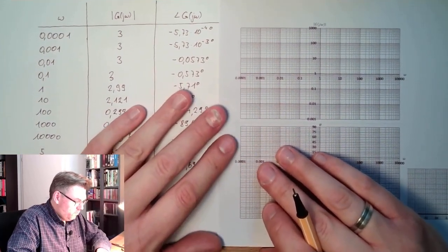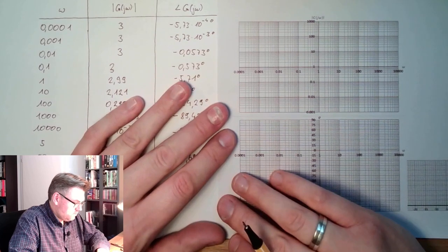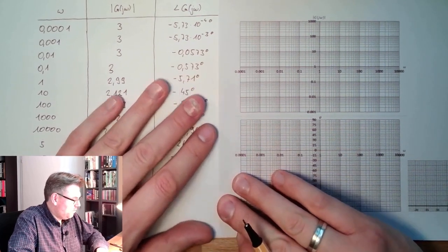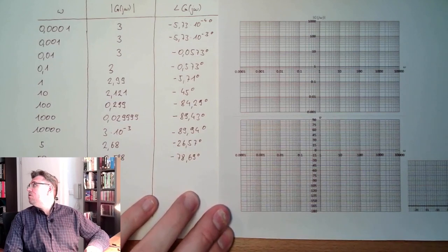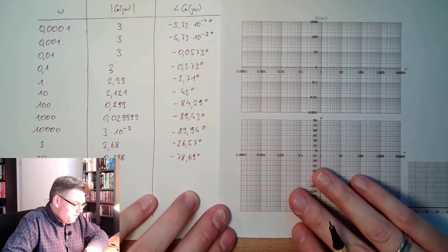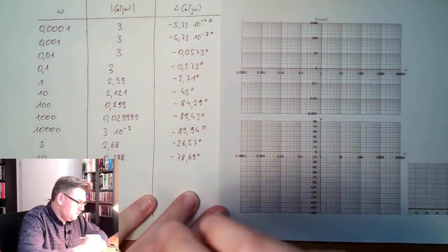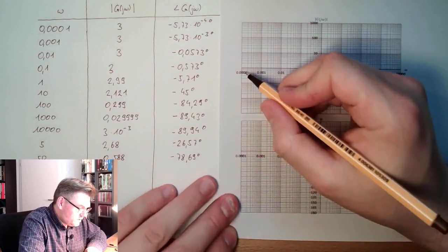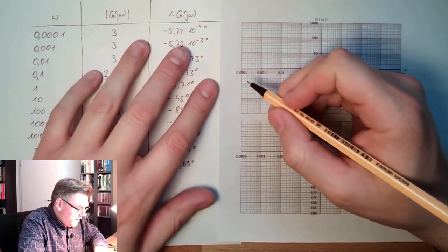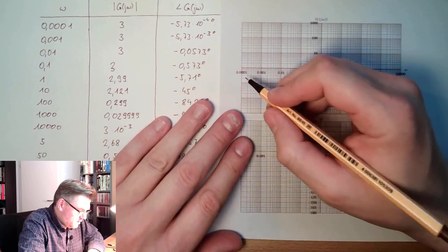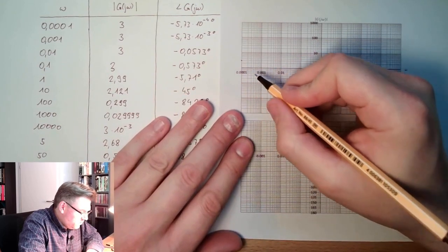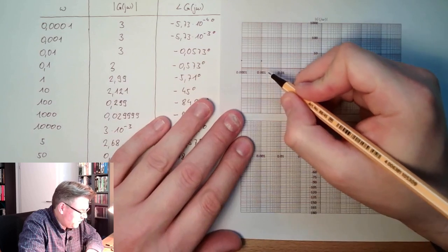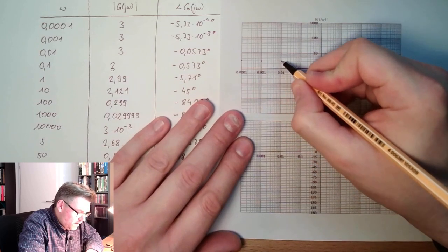So if I'm using now these numbers here, at 0.01 I am at 3, so 1, 2, 3, I'm here. At 0.001 I'm here at 3. At 0.01 I'm here at 3.